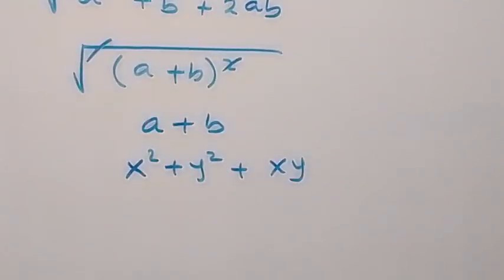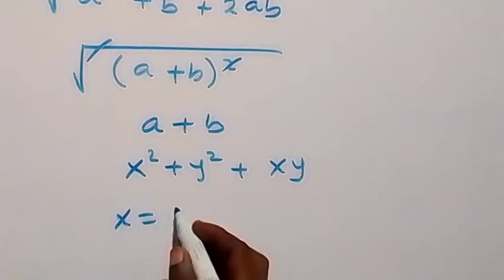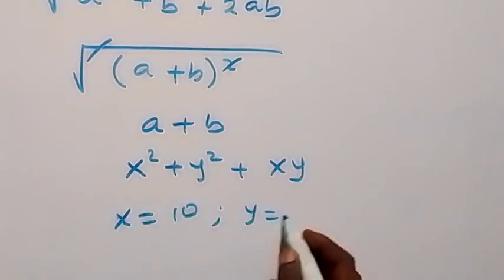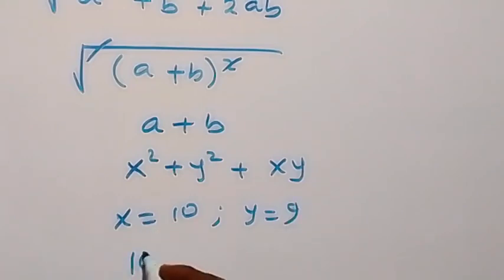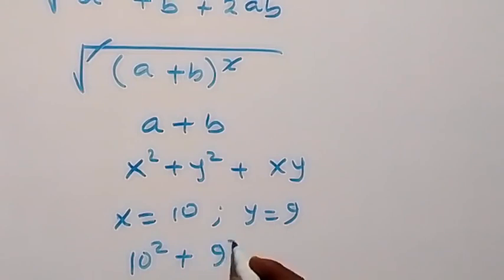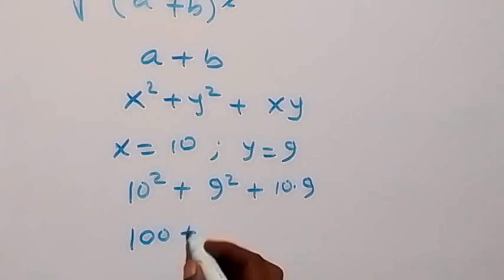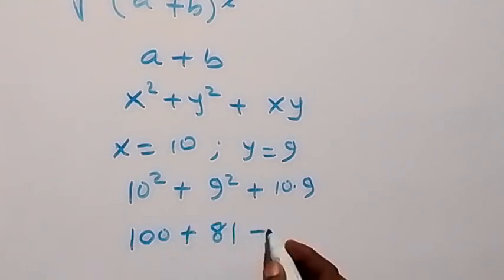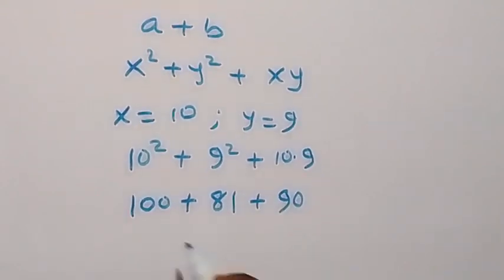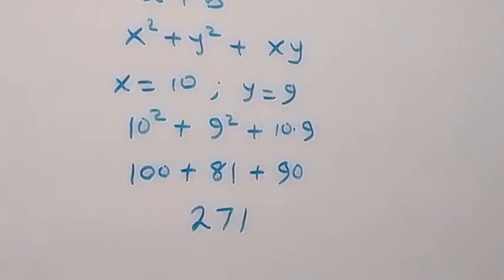Now we substitute back: x equals 10 and y equals 9. This gives us 10 squared plus 9 squared plus 10 times 9. That is 100 plus 81 plus 90. When we sum this all, this gives us 271. So here we have the final answer to this given problem: 271.